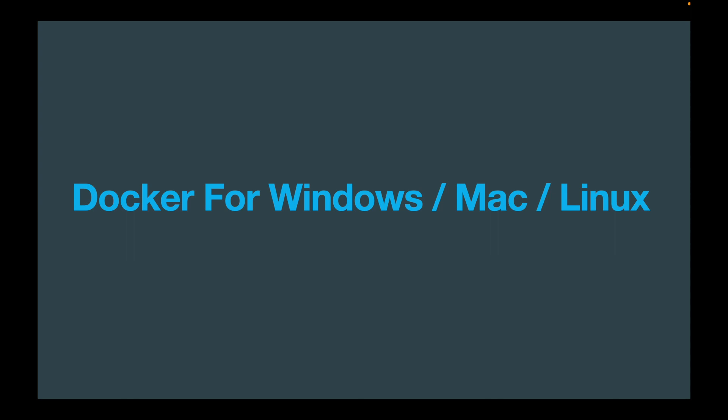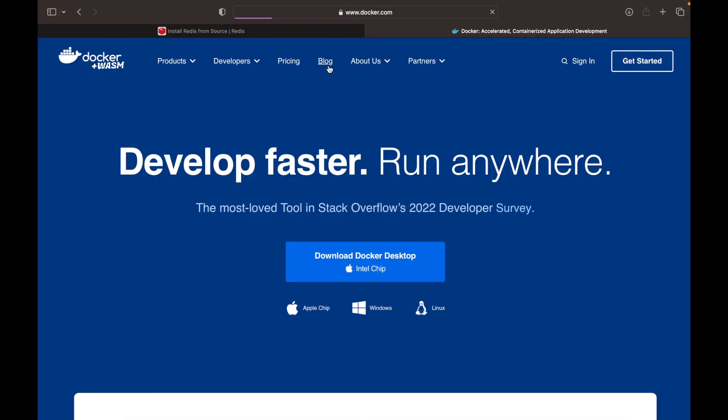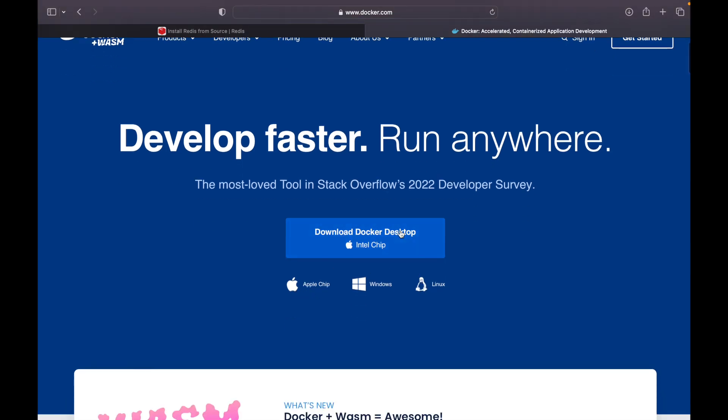To run Docker commands on your local machine you need to install Docker for your operating system — whether Windows, Mac, or Linux. Visit docker.com, create an account, download the installer for your OS, run it, log in to Docker, and that's it. But let's understand what that Docker software we're installing actually does and how it's structured.